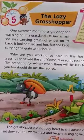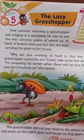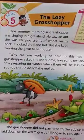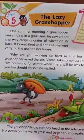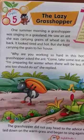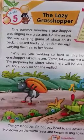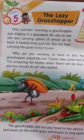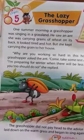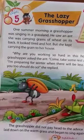Chapter number 5 is the lazy grasshopper. This is the story about a grasshopper and an ant. It is good to be active but bad to be lazy, as we all know. Laziness is a bad quality of a person.